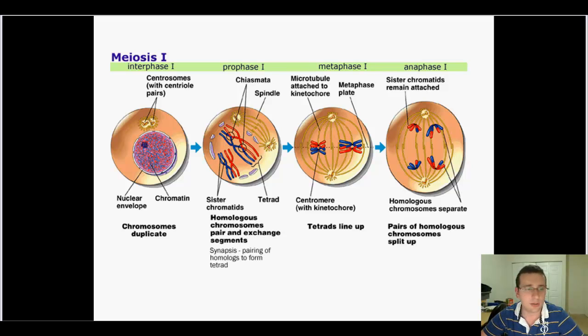You will see these paired homologue structures called tetrads form. Tetrads because you see four chromatids all getting together. At the same time, everything else that would happen normally during prophase in mitosis is happening. The nucleus is going away, the spindle starts to form, chromosomes start to move towards the equator.